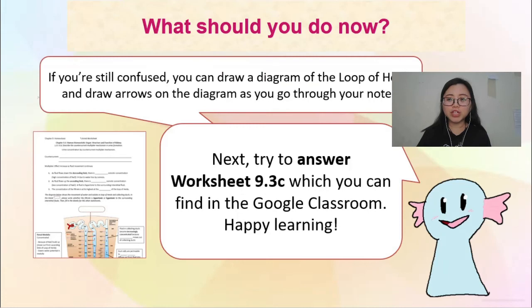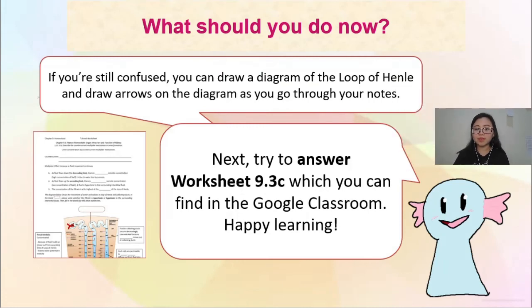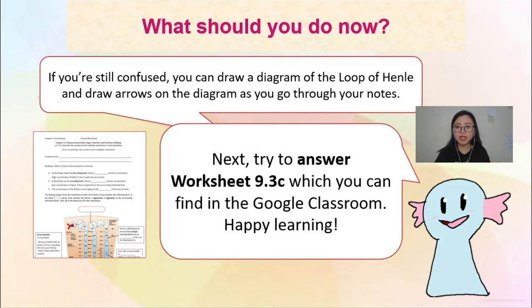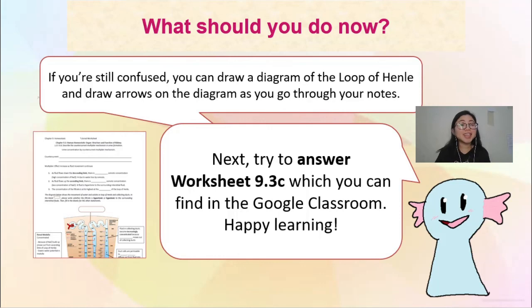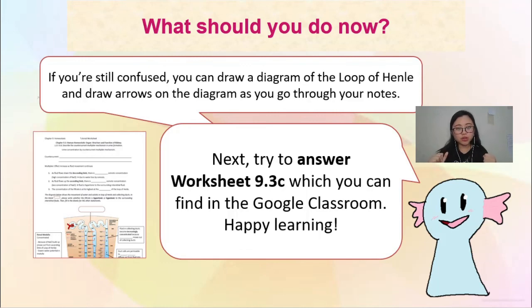I will move on to the final slide — what should you do now. If you're still confused, draw more diagrams of the loop of Henle and draw arrows as you go through your notes, so you understand what each sentence means in the diagram. Try to answer worksheet 9.3 which you can find in Google Classroom — it's just a short fill-in-the-blank, not even a full page. That is your only homework for 9.3. If you understand, that's amazing; if not, read it again and don't stress too much about it — ini cuma sebahagian kecil daripada PSPM. Thank you very much for your time and attention, and I hope to see you again in the next video.